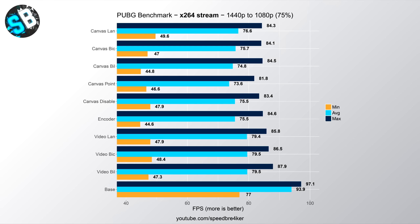Moving to live streaming using x264, encoding on the CPU: encoder downscaling once again produces significantly lower in-game FPS than the Video tab. Interestingly, using the canvas to downscale produces almost identical, if not even worse, results than the encoder. So in this scenario you really don't want to be downscaling using the canvas.